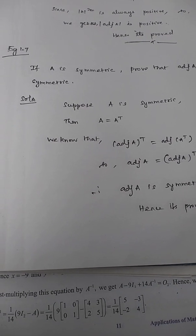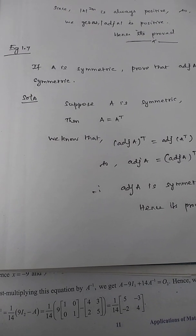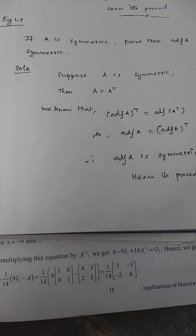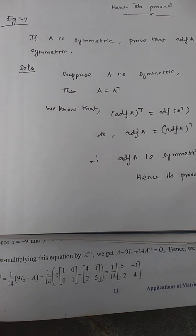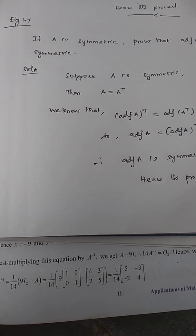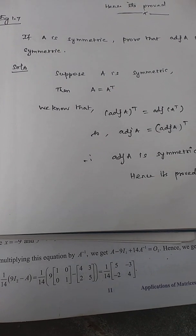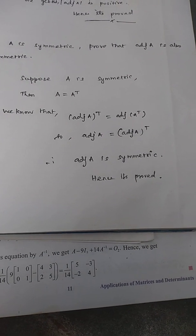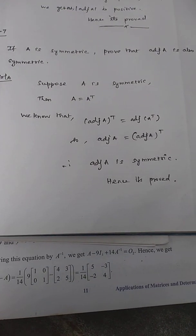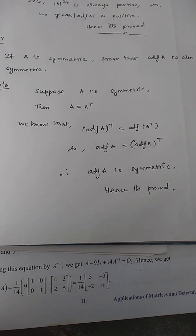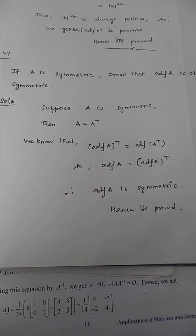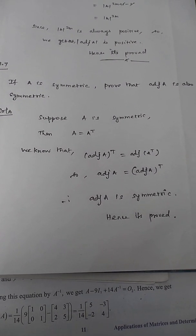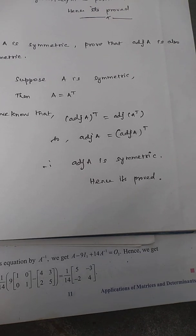Hi students, this is Satish. Last class: inverse of properties. Now Example 1.7 — if A is symmetric, prove that adjoint A is also symmetric. A is symmetric and adjoint A is also symmetric.